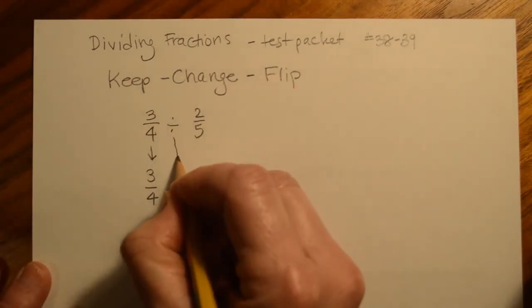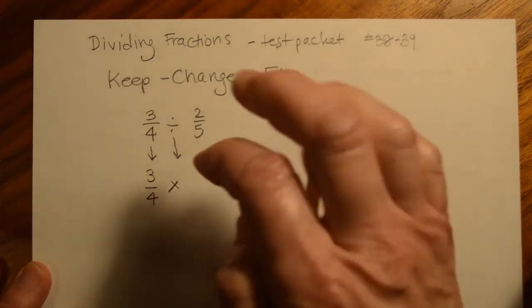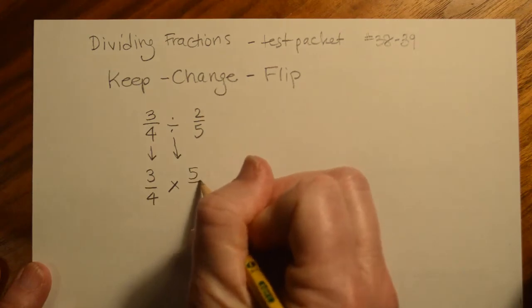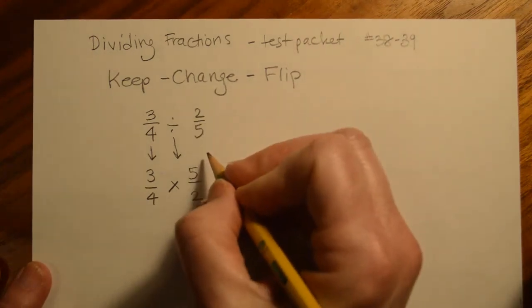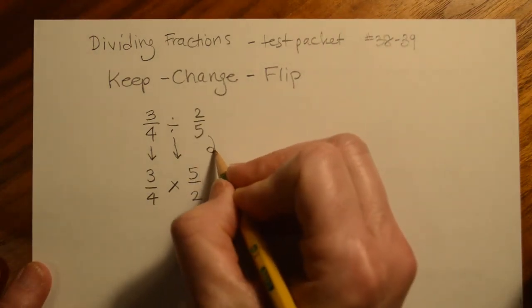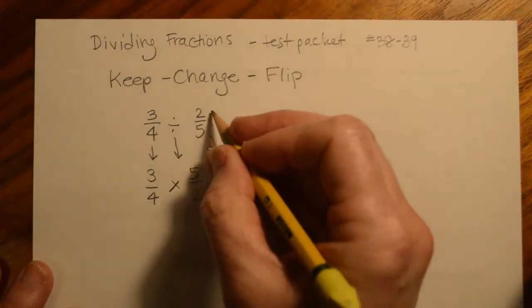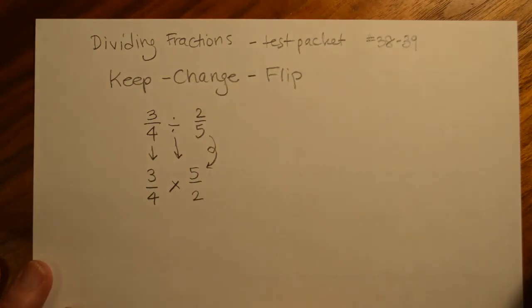change the sign from divide to multiply and flip the second fraction. What that means is that you just turn it upside down. This becomes a 5 and this becomes a 2. So it was 2/5. And what it's going to do is it's going to flip and come down here in the reversed order. So the denominator becomes the numerator and the numerator becomes the denominator.